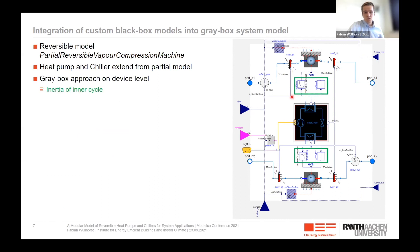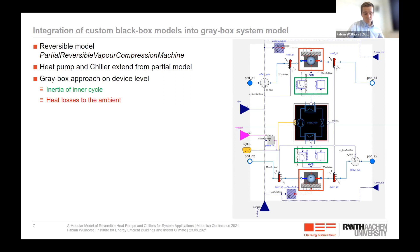On this machine level, we implemented further gray box modeling options — physical additions to the black box approach. First, we added inertia using a critical damper model from the Modelica standard library, adding inertia from the refrigerant and inner components such as the compressor to the heat flows going into the condenser and evaporator. Second, we implemented heat losses to the ambient to accurately describe the dynamics on the condenser and evaporator side. These two options are optional, so the user can decide on the modeling depth.